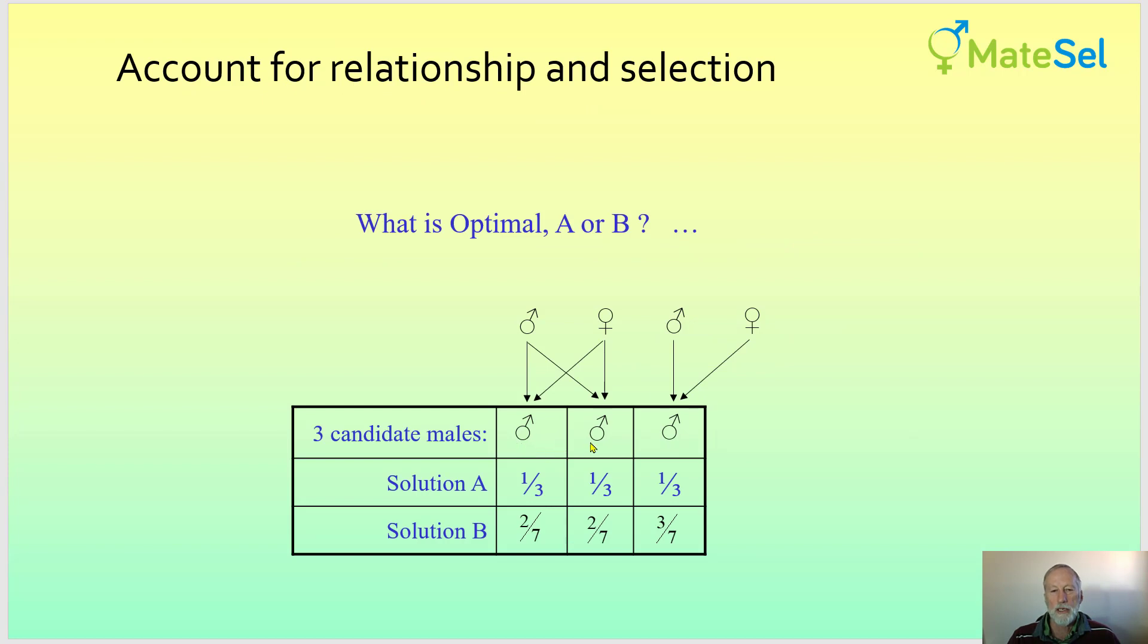So let's consider the scenario where we have three individual males and we want to know what contribution we should allow them to have in the next generation. So simply, we would just give them a third each if we wanted to spread the contributions and minimize x'x over 2, the rate of inbreeding predicted in the simple classic way.